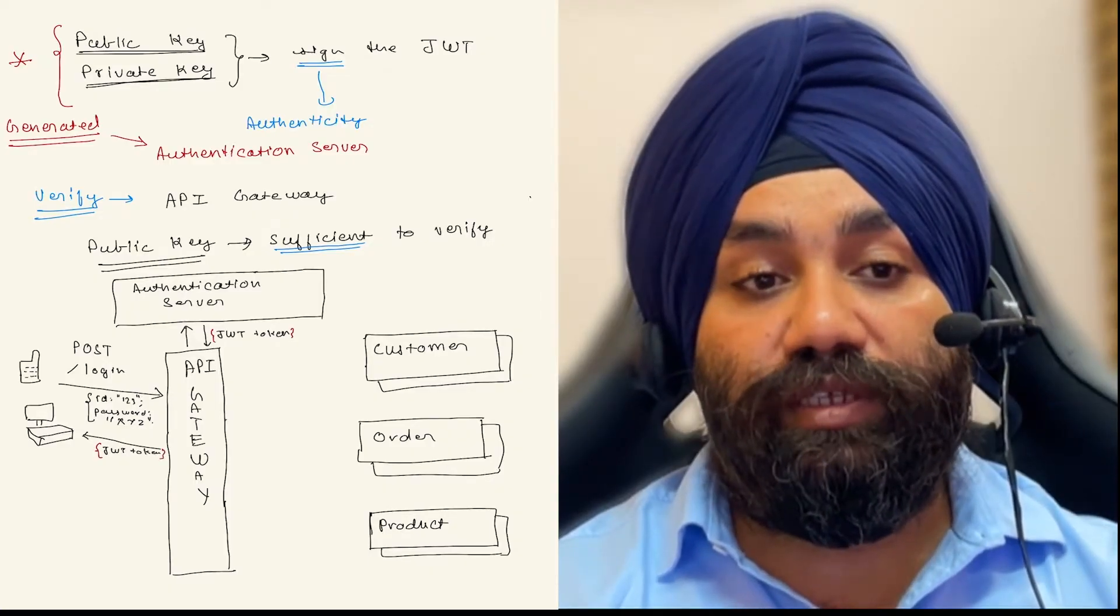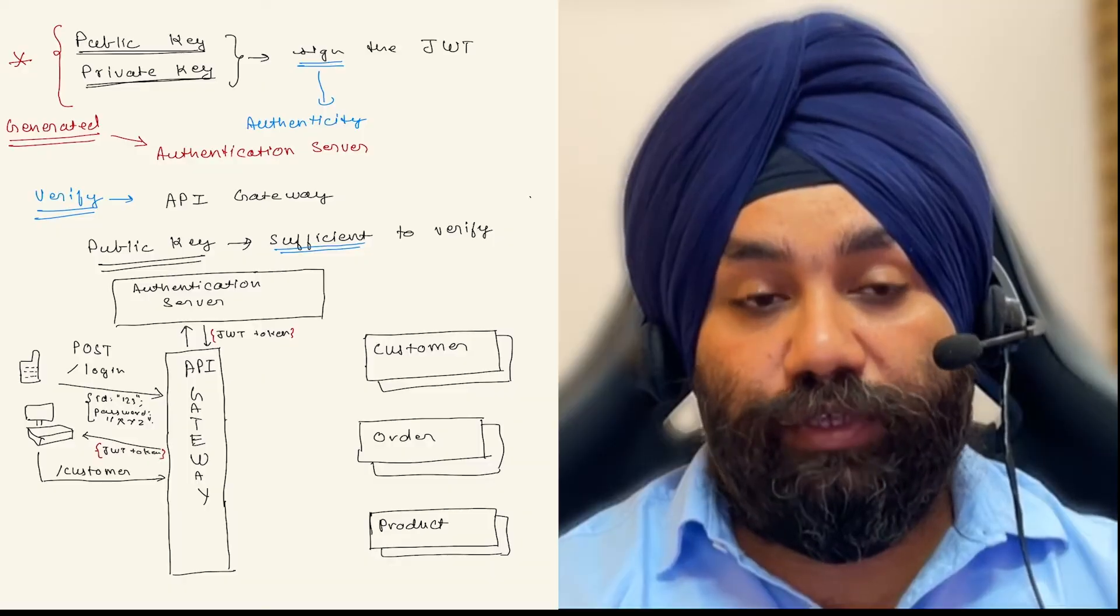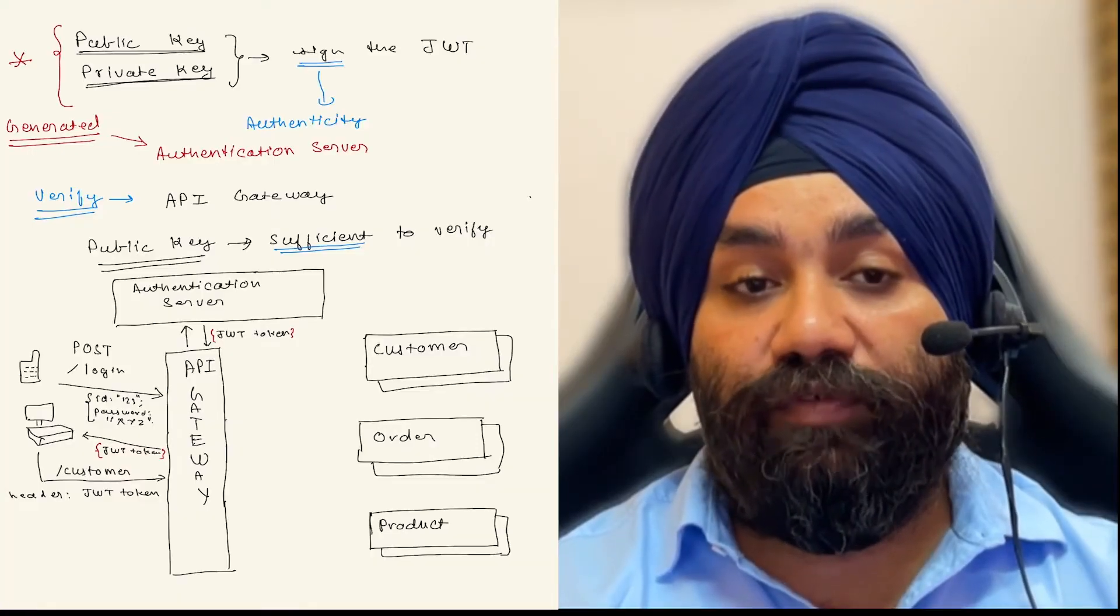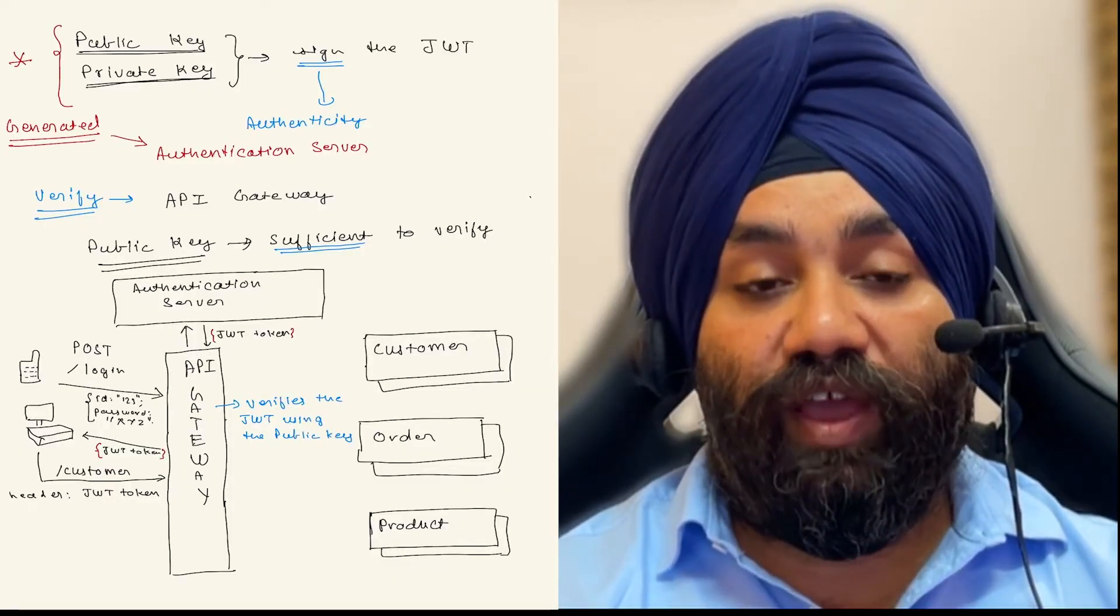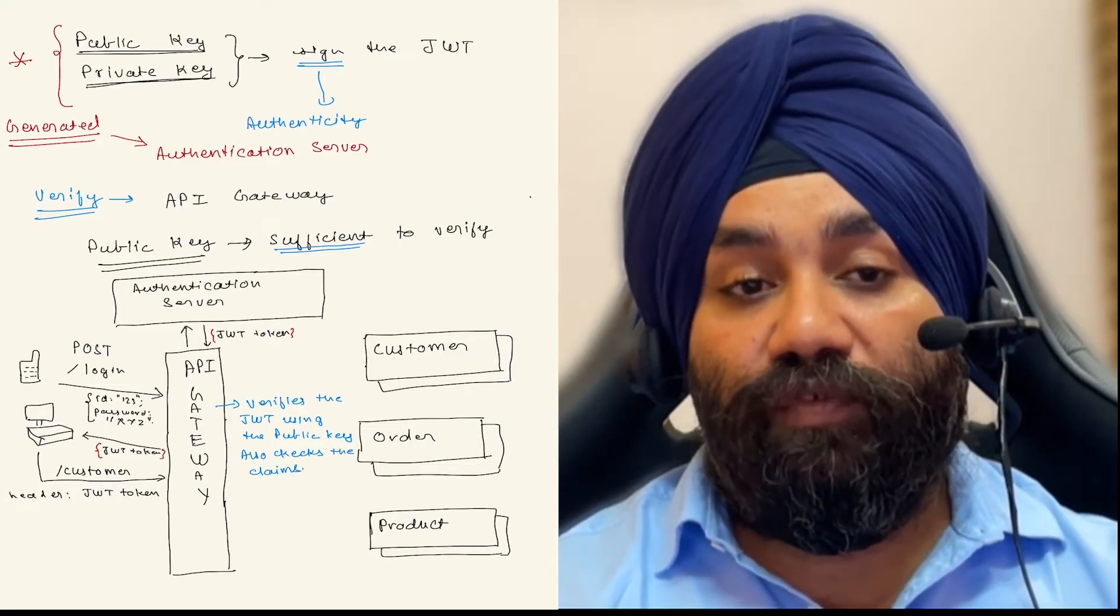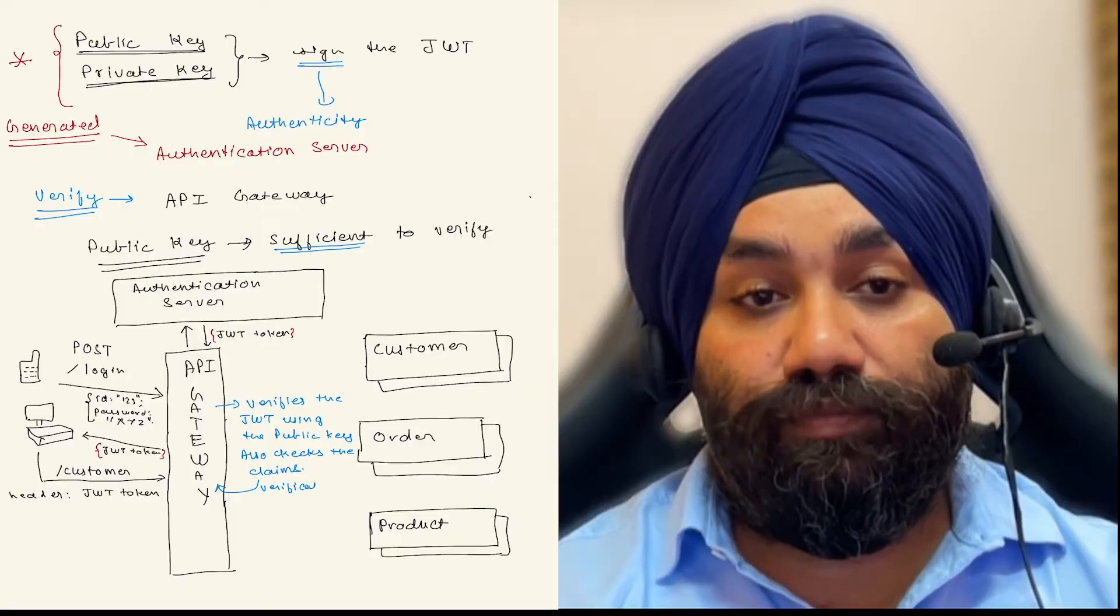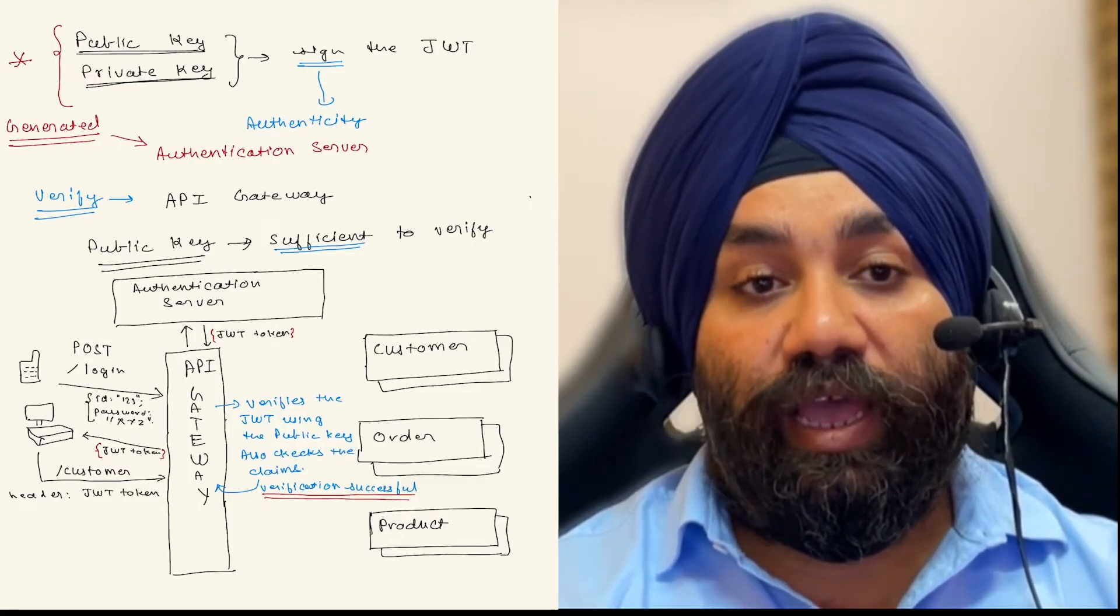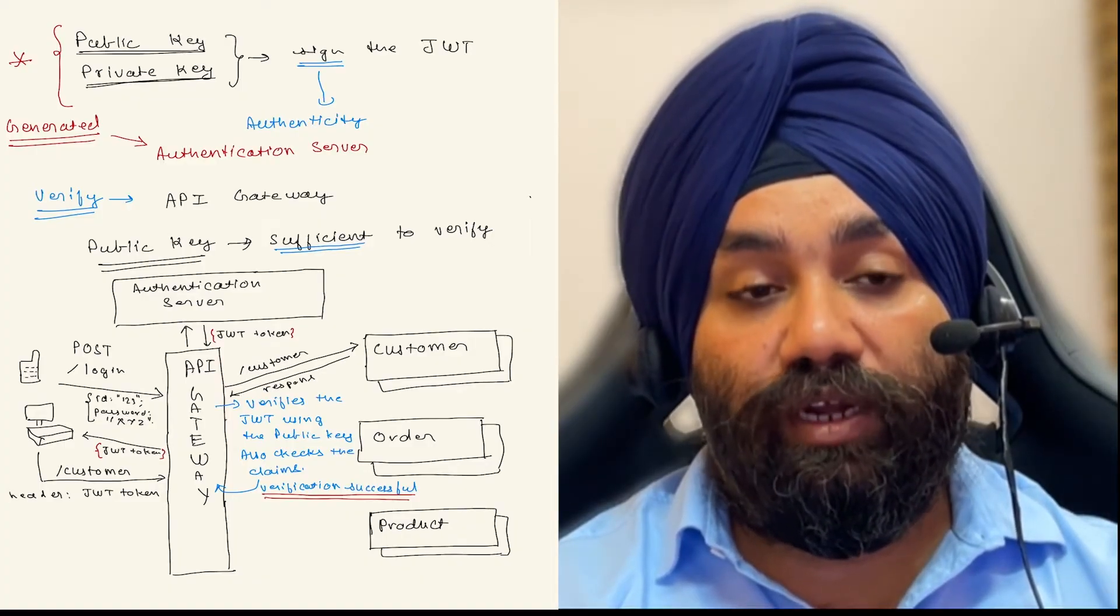Now further, if we try to access any of the microservices, what we need to do is we need to pass this JWT as a header in our request. For example, if we are trying to access the customer service, this request goes to the API gateway, and then this request is first verified at the API gateway level. Using the public key, it is verified whether it is a valid JWT or not, and also it checks from the payload whether this JWT has authorization to access the customer service or not. After the verification is successful, then only it is allowed to access the customer service, and then we receive the response from the customer service, which the API gateway forwards back to the client.